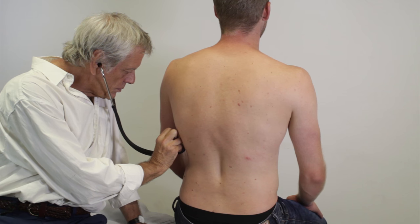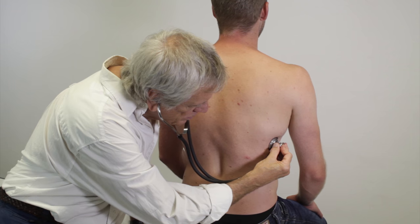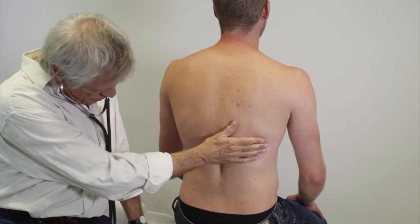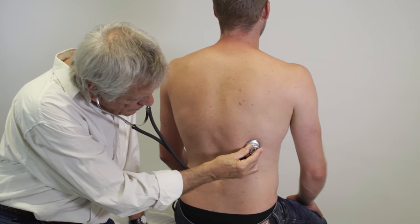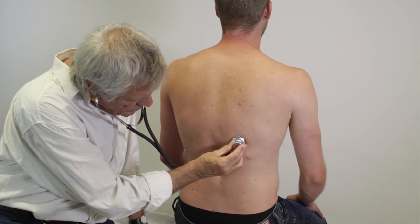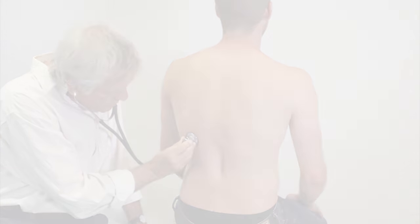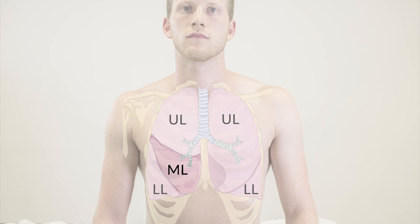Breath sounds heard over normal pulmonary tissue are vesicular. Auscultation across the upper airways results in bronchial breath sounds, which have a higher pitch in comparison. Bronchial breath sounds heard over pulmonary tissue are considered pathological and hint at the presence of pneumonia. Evaluating the right middle lobe is best achieved through anterior auscultation. Therefore, if pneumonia is suspected, the lungs should always be examined from the anterior as well.